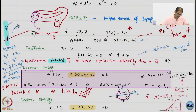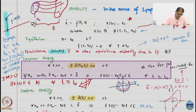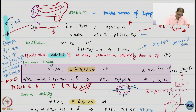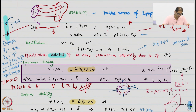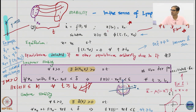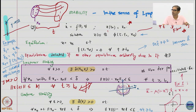Beyond that, we started talking about the notion of equilibrium, and how we care about isolated equilibrium. We gave an example of non-isolated equilibrium, which is very easy to construct. I also showed you a pen rolling on a surface — it has completely non-isolated equilibrium because every point is an equilibrium, so without disturbance you do not move from any point at all.